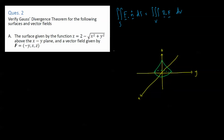If I let x equal 0, I'm on the zy-plane, and the equation becomes z equals 2 minus y, which is a straight line. It will be the same on the zx-plane if you let y equal 0. If z equals 0, then 2 equals the square root of x squared plus y squared, giving x squared plus y squared equals 4 — the equation of a circle. We're interested in this region on the xy-plane, which gives us the limits for the surface integral on the left-hand side.